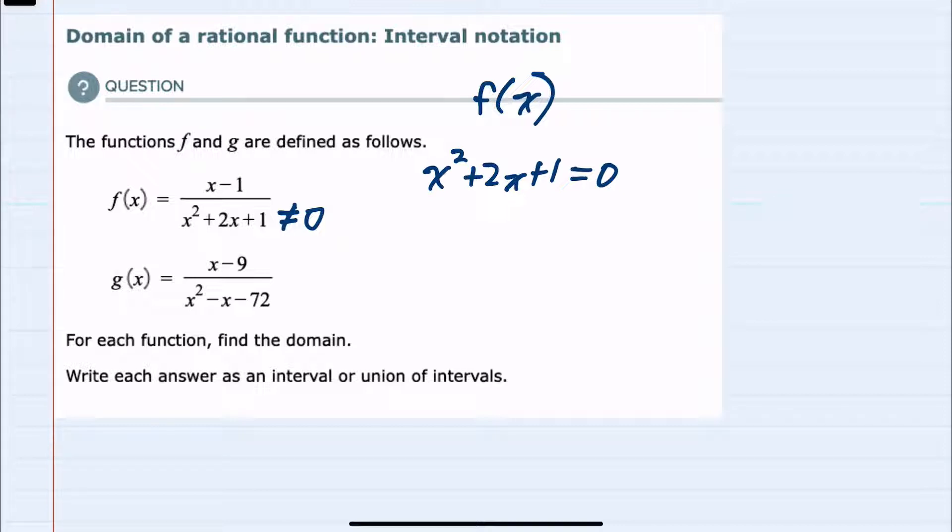And since the left hand side is a quadratic with leading coefficient of 1, I can factor this pretty easily as an x and x to give me an x squared, a plus 1, and a plus 1 so that when I FOIL, my last term would be a 1 times 1. And the outer and inner would add up to a 2x.